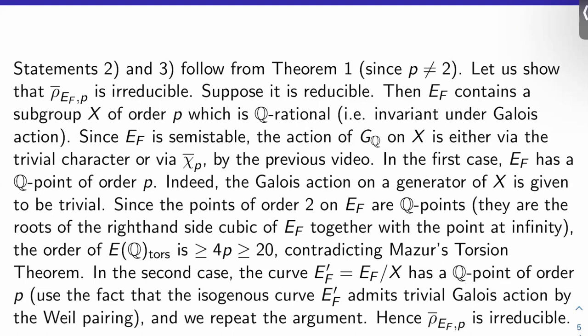Now, E_F is a semi-stable elliptic curve. So the action of Galois on X is either via the trivial character or via the mod P cyclotomic character by the previous video. All right? In the first case, so in the case that this action is given by the trivial character, E_F has a Q point of order P. I mean, that's simple to see. The Galois action on a generator of X is literally given to be trivial in this case.